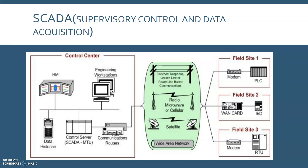A control server stores and processes information from RTU inputs and outputs, while the RTU or PLC controls the local process. The communication hardware allows the transfer of information and data back and forth between the control server and the RTUs or PLCs. The software is programmed to tell the system what and when to monitor, what parameter ranges are acceptable, and what response to initiate when parameters change outside acceptable values.